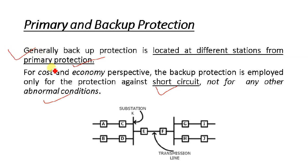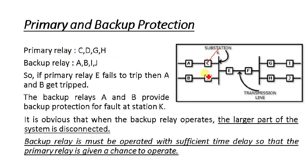Now let us understand the concept of backup relaying applied to a transmission line. We have a transmission line with protection at sections E and F, and a substation at point K. In this diagram, relays C, D, G, and H are primary relays, while relays A, B, I, and J are backup relays. If our primary relay E fails to trip when there is a fault, the backup relays A and B should get tripped.